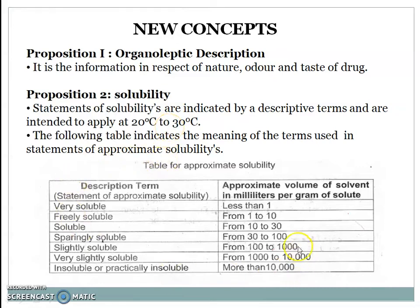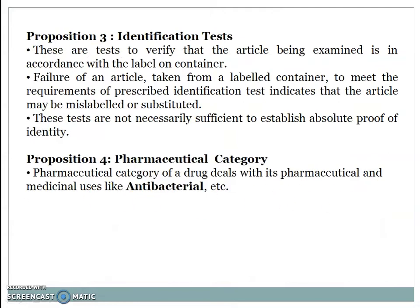This is the table which indicates the meaning of terms used in the statement of approximate solubility. Depending upon the descriptive term, it shows the approximate volume of the solvent in milliliters per gram. Proposition 3: identification tests — these are tests to verify that the article being examined is in accordance with the label on the container. Failure to meet prescribed identification tests indicates that the article may be mislabeled or substituted.